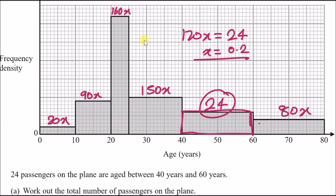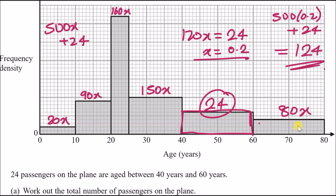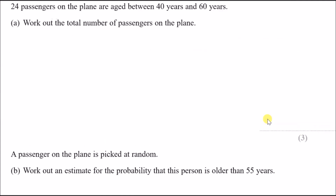Now add up all the x terms: 20x + 90x + 160x + 150x + 80x = 500x, plus the 24 from the known block. Since x = 0.2, we calculate 500 × 0.2 + 24 = 100 + 24 = 124. The total number of passengers is 124.